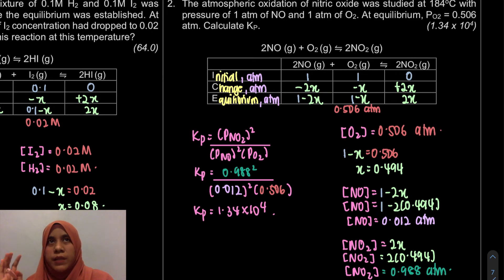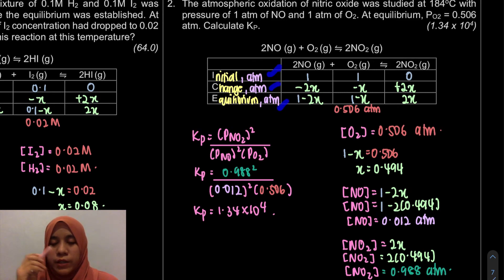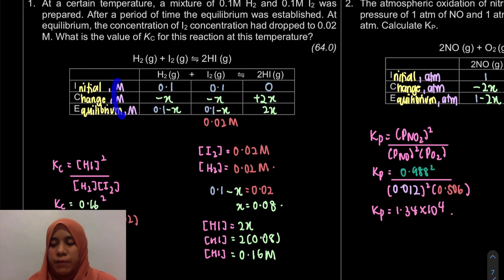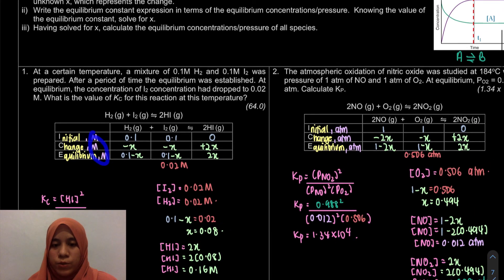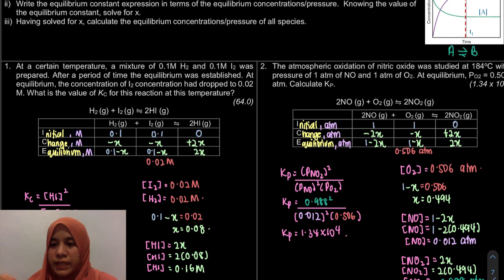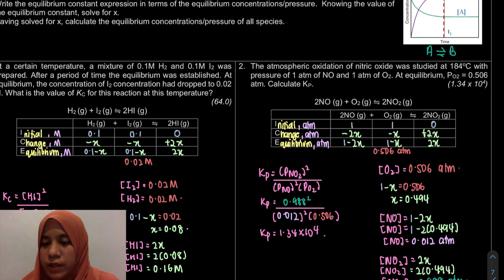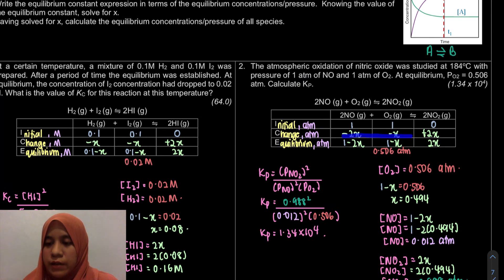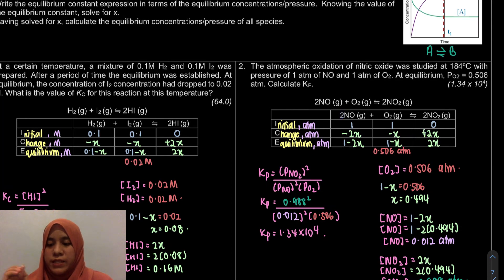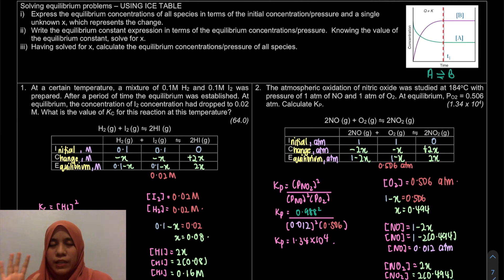Remember, the ICE table does not have to use concentration only — pressure works too. If pressure is given, make sure the unit matches: if atm is given, use atm; if mmHg is given, use mmHg. For concentration, the unit is capital M, Molarity. If you are unsure, check the hint given in the question at the initial stage. Change is minus for reactants and plus for products based on stoichiometry. For equilibrium, just combine Initial and Change. That concludes Examples 1 and 2 on page 7.